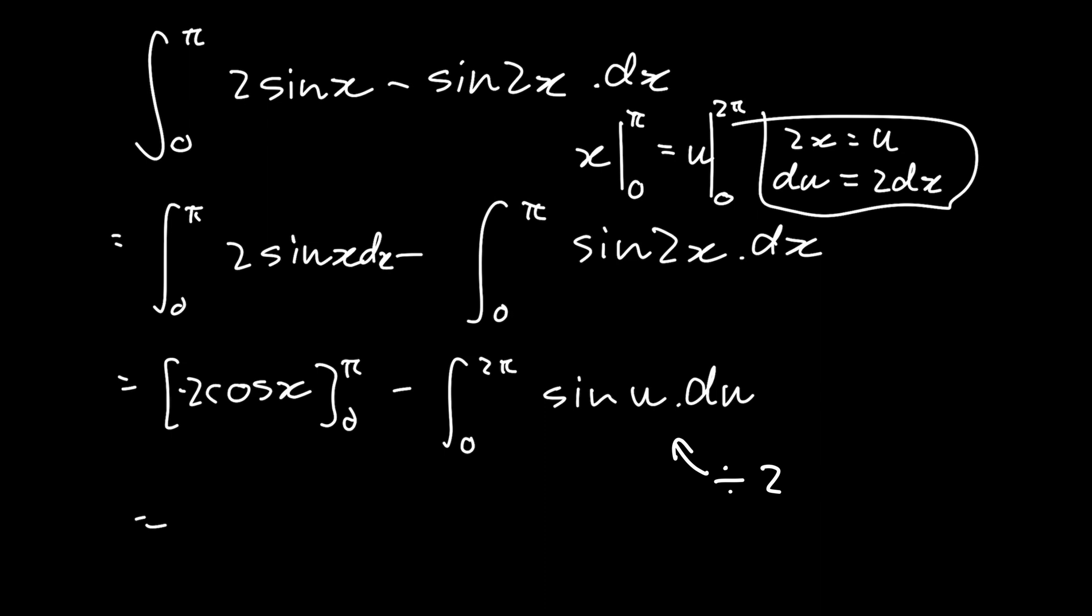Now let's substitute in the limits. We have -2cos(π) - (-2cos(0)), and then subtract this integral.